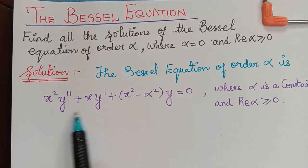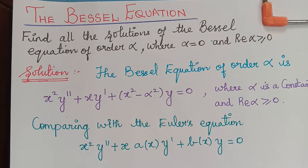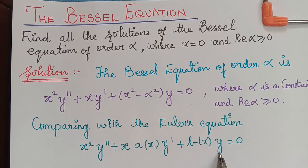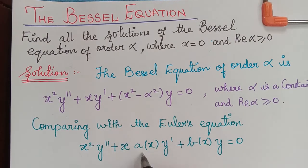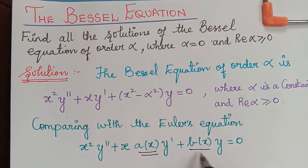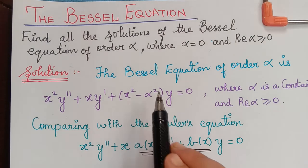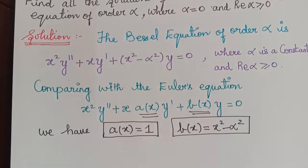Now we have to compare this equation with Euler's equation, which we learned in our previous video. Euler's equation is given by x squared y double dash plus x times a(x) y dash plus b(x) y equals 0. Comparing these two equations, we can say that the value of a(x) is equal to 1 and the value of b(x) is equal to x squared minus alpha squared.